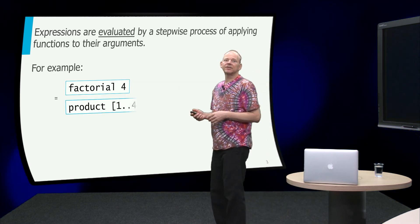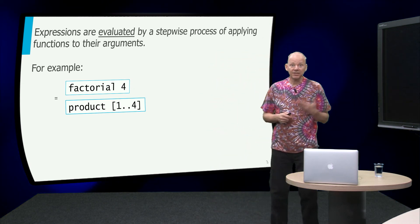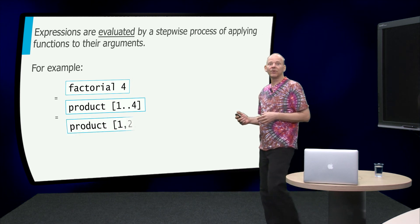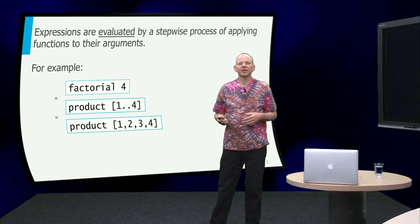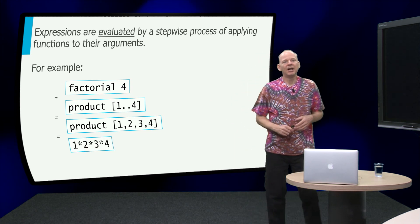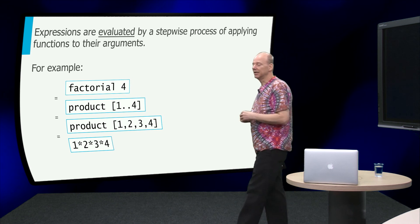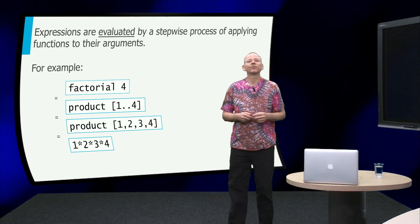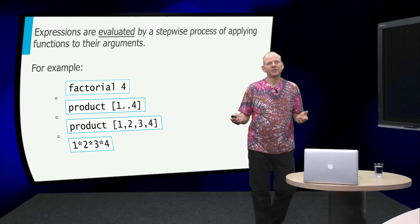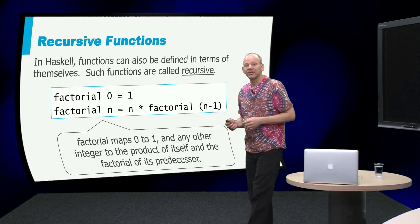So we take the list of values between 1 to n and multiply them all together. If we are going to evaluate this factorial 4, we unfold the definition that was product 1 to 4. The list 1 to 4 is product 1 to 3 to 4. And the product was just multiplying all the numbers. So there you see the product of 1, 2, 3, 4 is 1 times 2 times 3 times 4, which is 24.